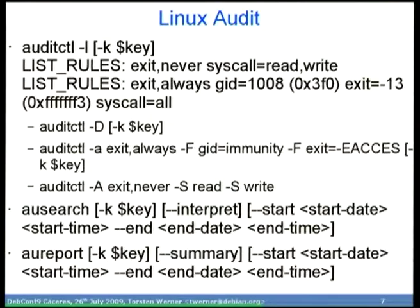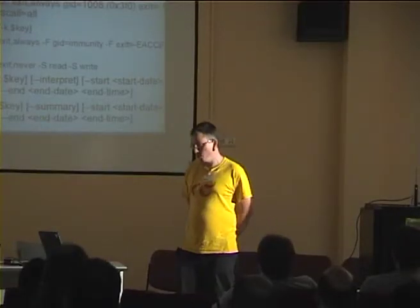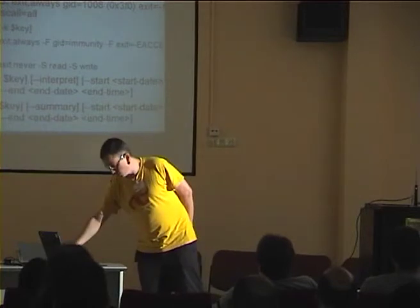Now I come back to Linux audit. It's a little bit awkward to use, but if you make a narrow filesystem you need some way to debug what your processes are accessing — which network sockets they are opening and such things. I found that Linux audit is usable but not as easy as you'd wish. You use typical tools like auditctl, ausearch, and aureport to look at what your processes are doing.